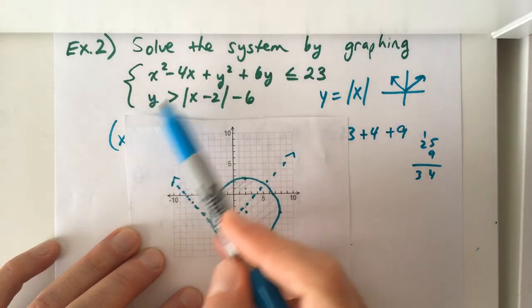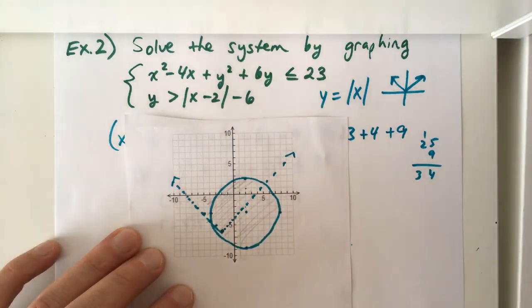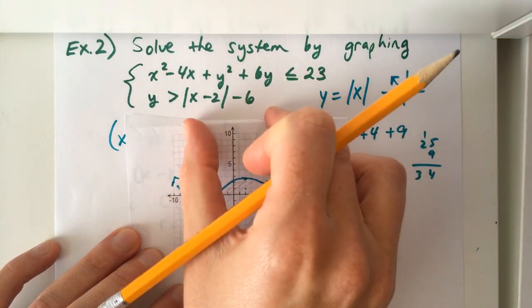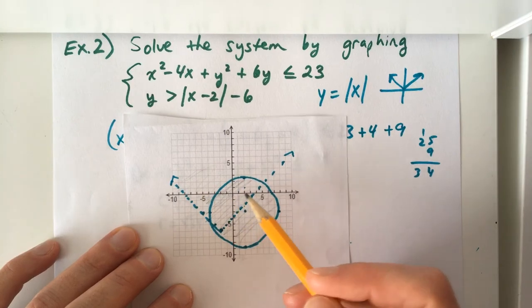And then when we think about where to shade, this is y is greater than the function. So greater than the function would be above the function up here. Again, you can always test a point. If I test a point somewhere above this v-shape, a really easy point to test again would be 0, 0.